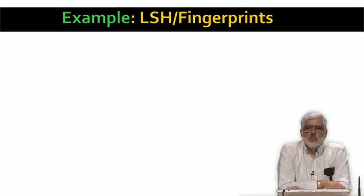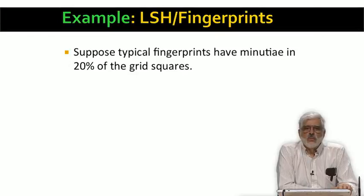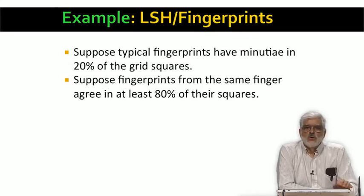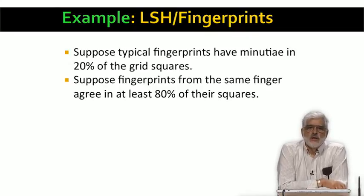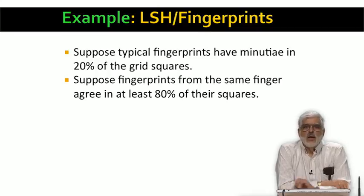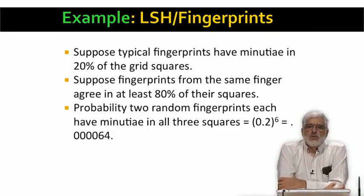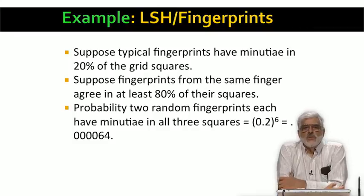To see why the numbers we proposed make sense, let's look at a typical situation. We'll suppose that approximately 20% of the squares hold minutiae. Also suppose that if two fingerprints represent the same finger, then at least 80% of the squares with minutiae from one also have minutiae from the other. The fact that we place minutiae in nearby squares if they are at the boundary helps make this assumption true. Let's see what it takes for the bucket corresponding to a set of three squares to receive two different fingerprints.